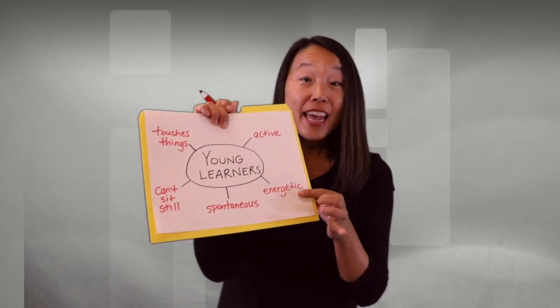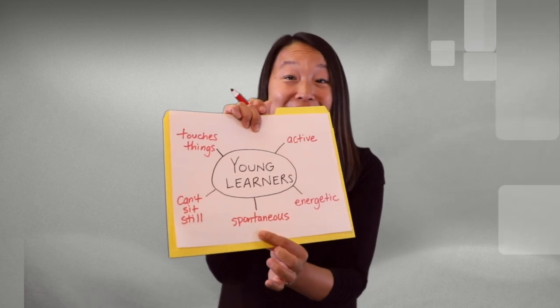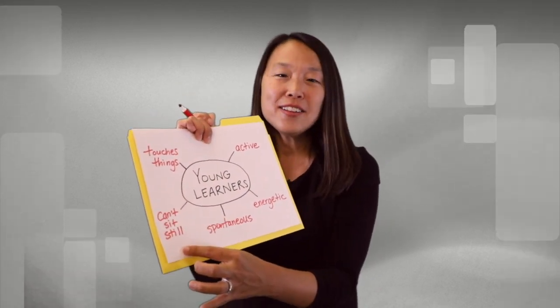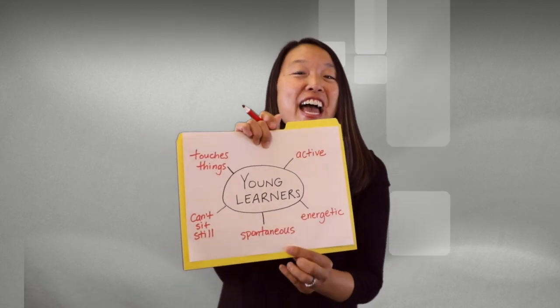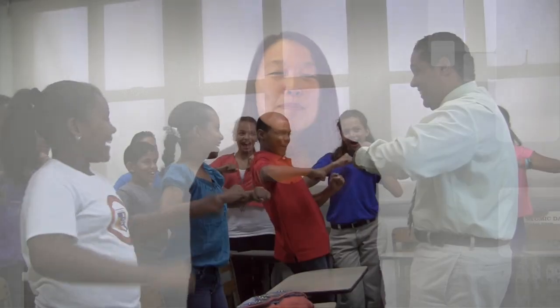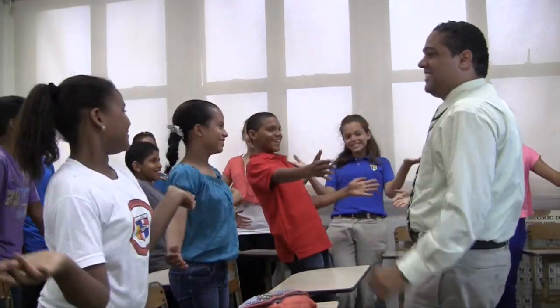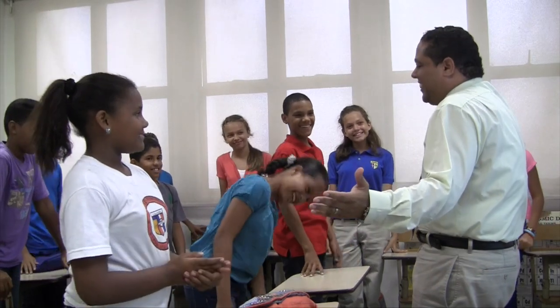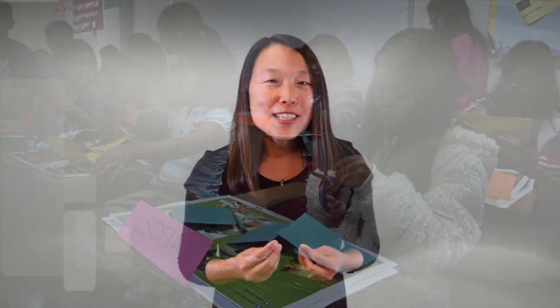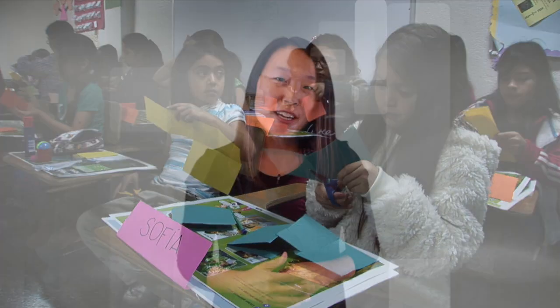Active, energetic, spontaneous, can't sit still, and touches things. Young learners are what we call kinesthetic learners. They like to move and wiggle their bodies. You can't expect them to sit still in class all day. They also learn well through movement and gestures. They are tactile in their learning style — they love to touch and play with objects. So if you want to teach students what a ball is, give them a ball to bounce and throw.